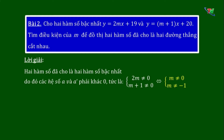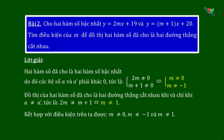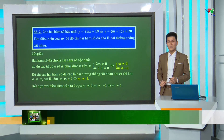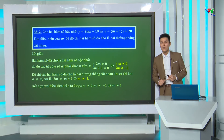Thứ nhất là điều kiện để 2 hàm số này là 2 hàm số bậc nhất. Thứ 2 là tìm điều kiện để 2 đường thẳng cắt nhau. 2 hàm số đã cho là hàm số bậc nhất do đó các hệ số A và A' khác 0, tức là 2M khác 0, M cộng 1 khác 0, tương đương M khác 0 và M khác âm 1. Đồ thị của 2 hàm số là 2 đường thẳng cắt nhau khi và chỉ khi A khác A', tức là 2M khác M cộng 1, biến đổi ta được M khác 1. Kết hợp điều kiện ta được M khác 0, M khác âm 1 và M khác 1.